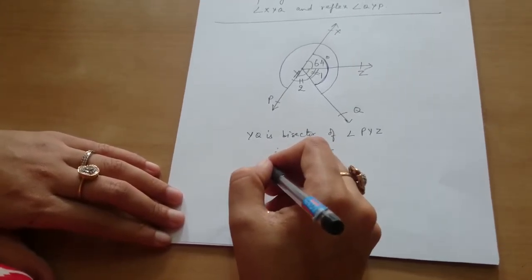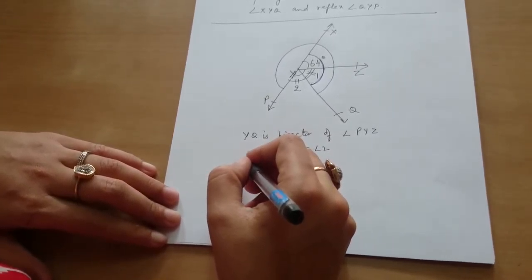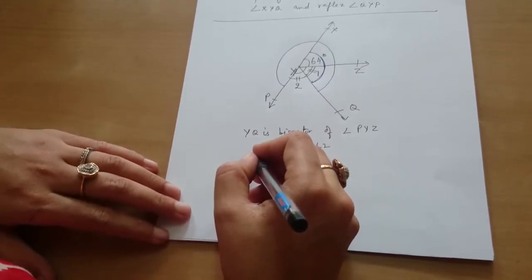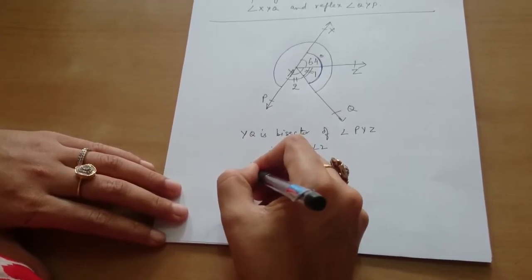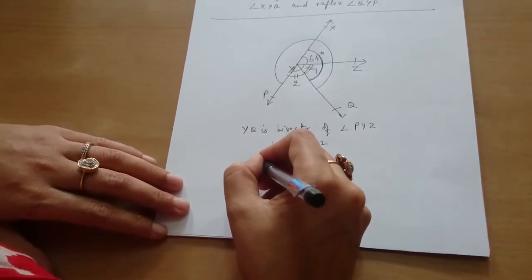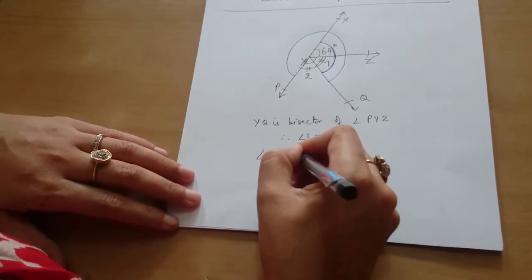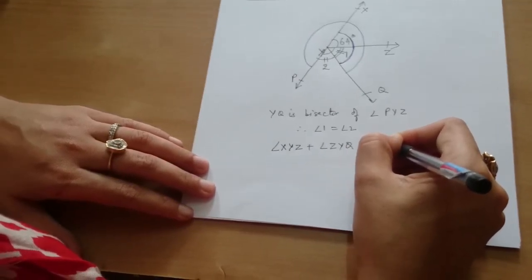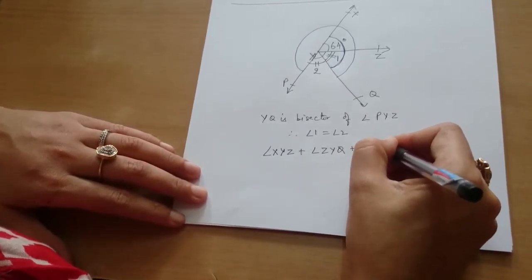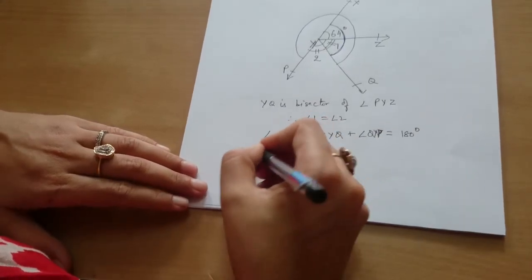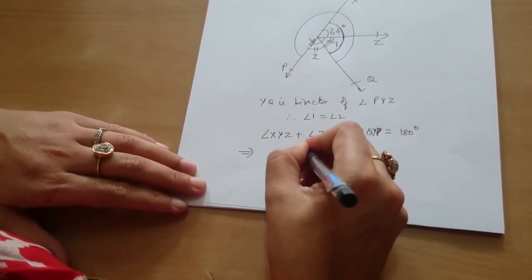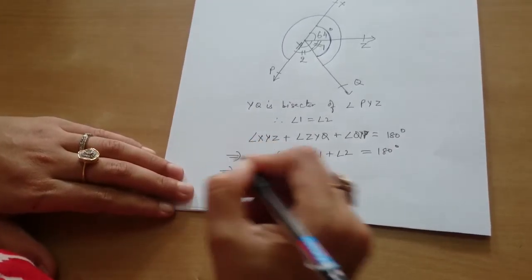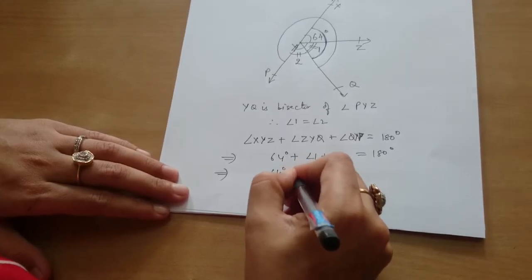According to the question, angle XYZ plus angle ZYQ plus QYP is equal to 180 degrees. Linear angles. Angle XYZ plus angle ZYQ plus angle QYP is equal to 180 degrees. This implies 64 degrees plus angle 1 plus angle 2 is equal to 180 degrees.